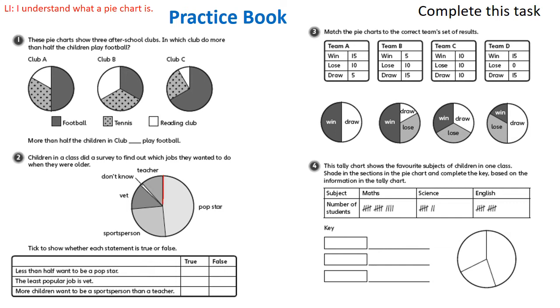So if we were going to draw a line, it would go straight down, wouldn't it? That would be half. So are the pop stars less than half or more than half? So it says less than half wanted to be a pop star. Is that true or is it false? The least popular job is a vet. Do you think that is true or not? More children wanted to be a sports person than a teacher. True or false?